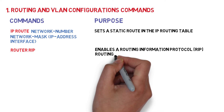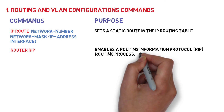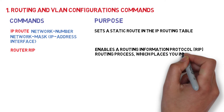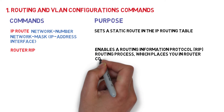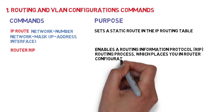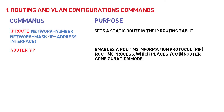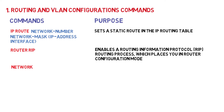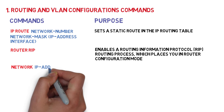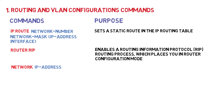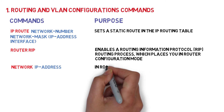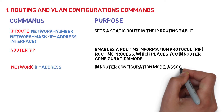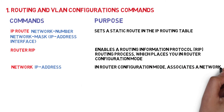Router RIP enables a Routing Information Protocol routing process, which places you in router configuration mode. The 'network IP address' command, in router configuration mode, associates a network with the RIP routing process.